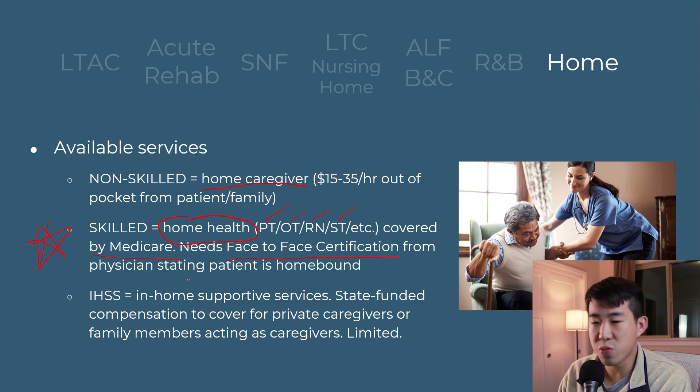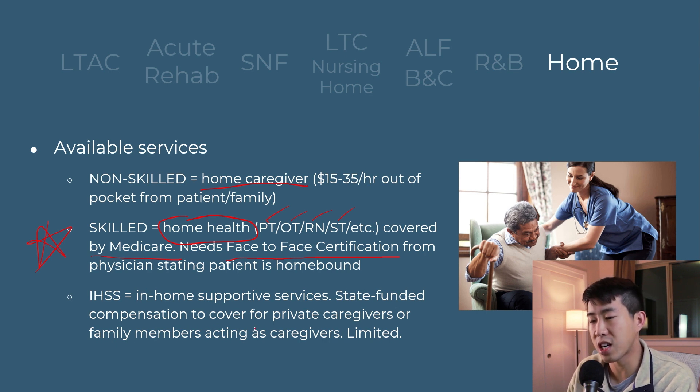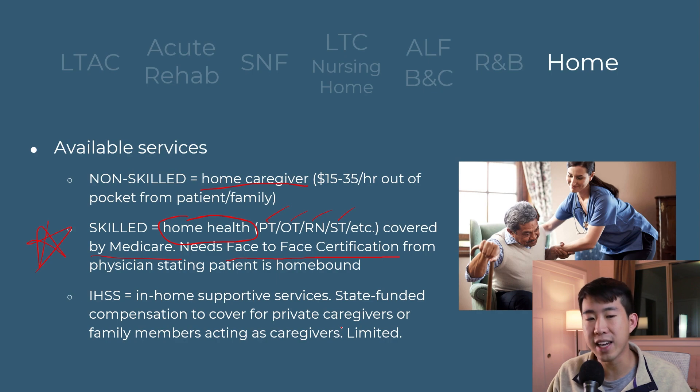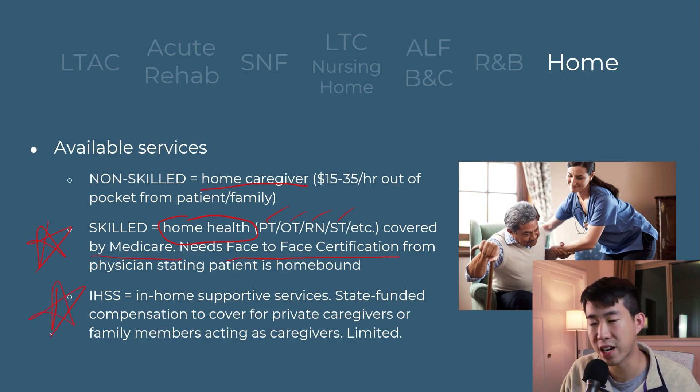IHSS — In-Home Supportive Services — is another thing that can help patients succeed at home. It's a state-funded compensation for private caregivers or family members acting as caregivers. It grants a certain number of hours per week to a patient based on their needs — for example, 35 hours a week of IHSS covered. However, family members often work far more than 35 hours a week — 50, 60, 70, even 80 hours or more — and are only compensated for a portion of their work. But that compensation does help, especially for patients with financial needs.